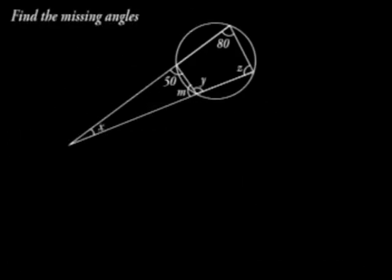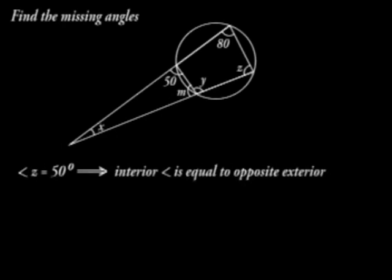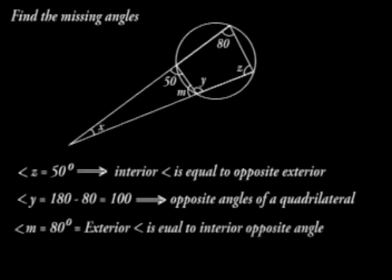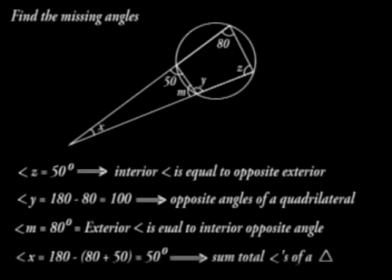Angle Z is equal to the opposite angle. Angle Z is 50 degrees. Angle Y is 180 minus 80, which is 100. Angle M is 80 degrees, since the exterior angle is equal to the opposite interior angle. And finally, angle X is 180 minus 80 plus 50, which is 50, from the fact that it is the sum total of angles of a triangle.